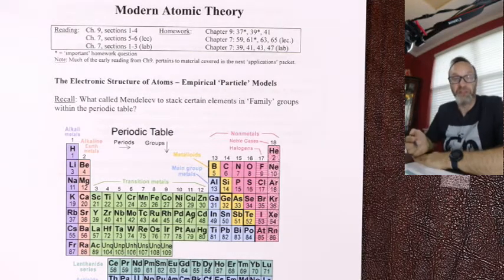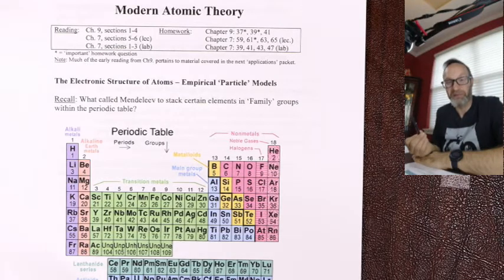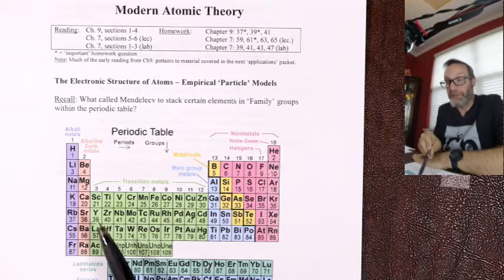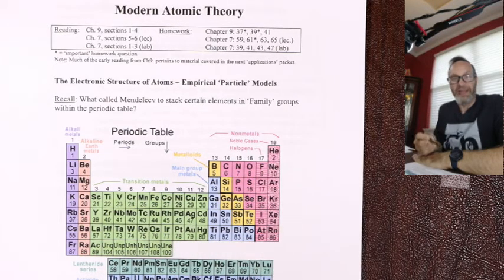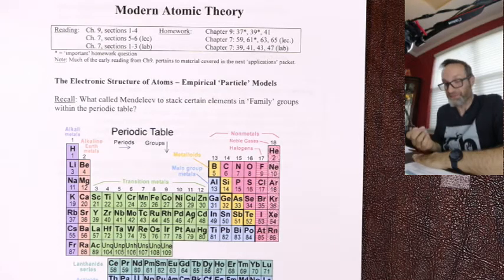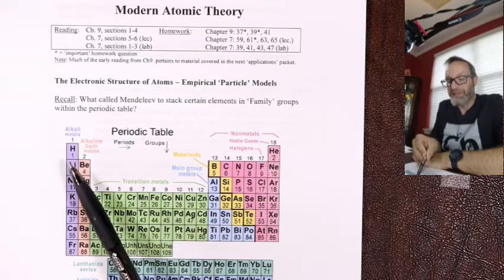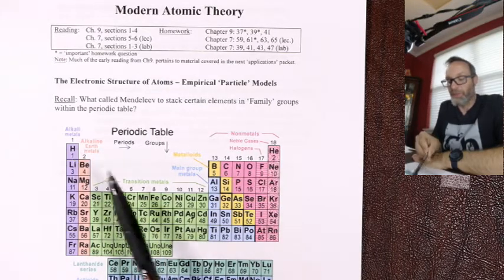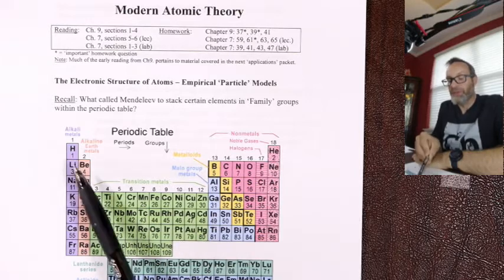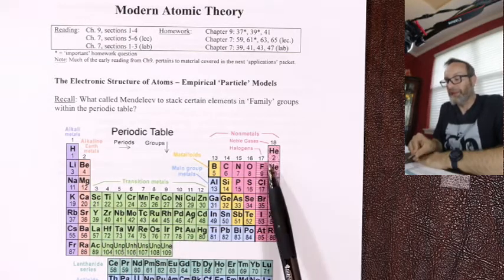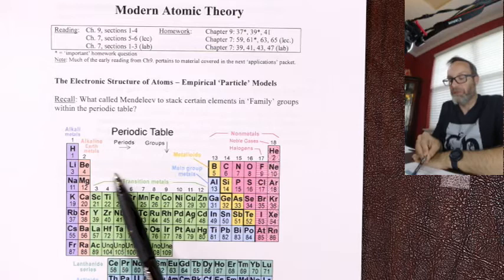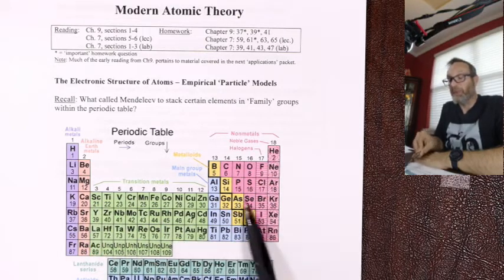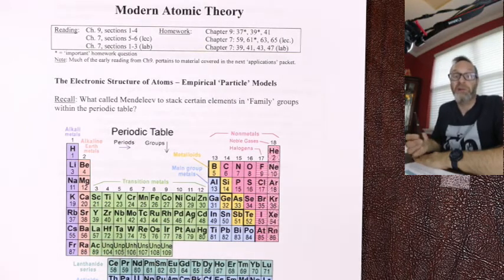Mendeleev didn't know how to arrange his first periodic table in terms of numbers of protons — protons hadn't been discovered yet. So he did come up with the first periodic table, and it looked very similar to ours. The periodic table is arranged in order of increasing atomic number reading left to right like a book — hydrogen has one proton, helium two, lithium three, and so on.